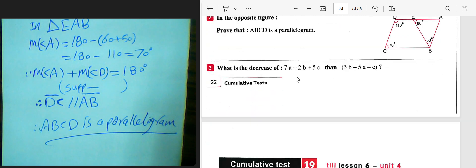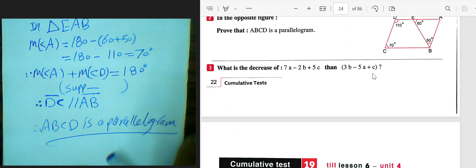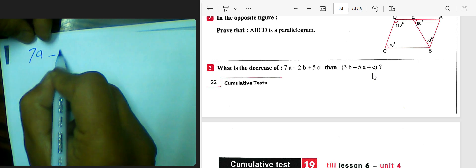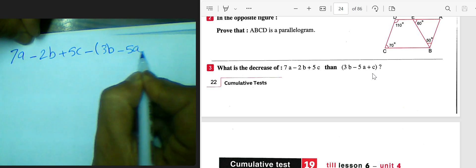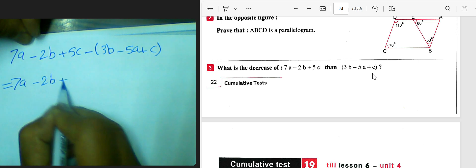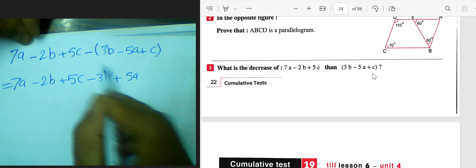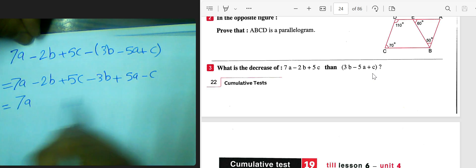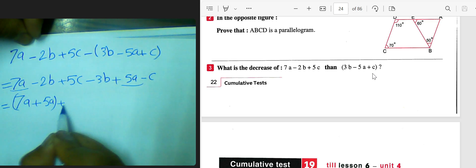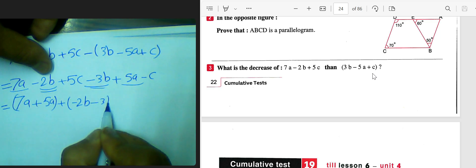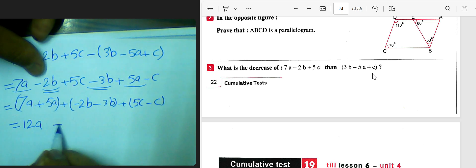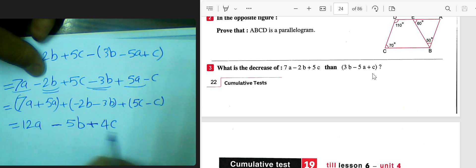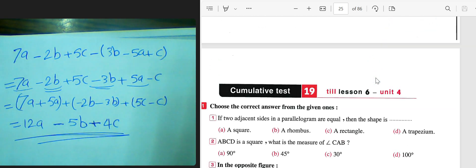Next example: What is the decrease of 7A minus 2B plus 5C, then 3B minus 5A plus C? We can find the difference between these expressions. Write 7A subtract by 2B plus 5C, subtract by the separation, 3B minus 5A plus C. We can write 7A subtract by 2B plus 5C, negative 3B, negative negative positive. Then we can write 7A plus 5A, negative 2B and negative 3B, and 5C negative C. It will be 12A, negative 5B, and 4C.